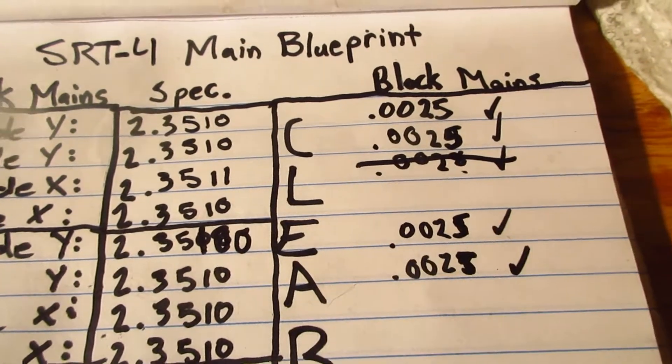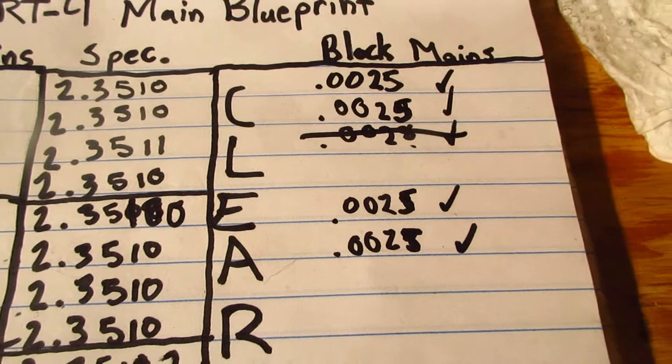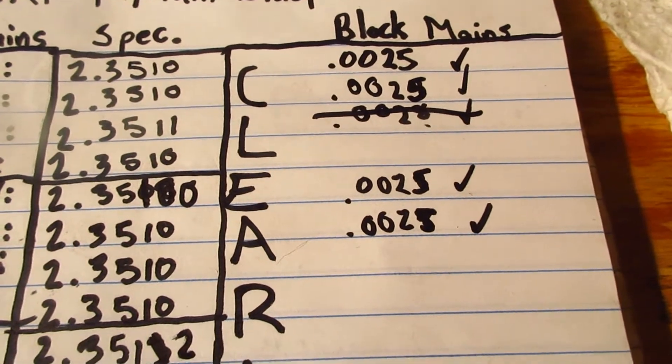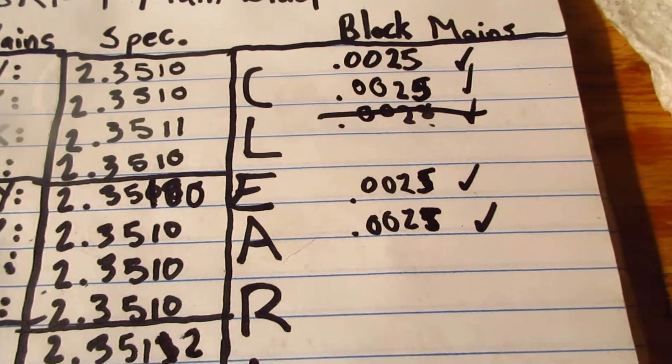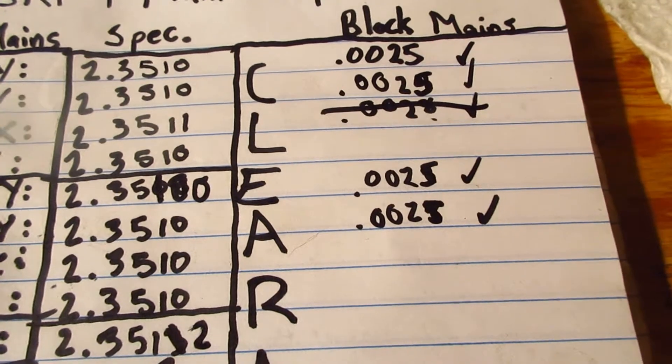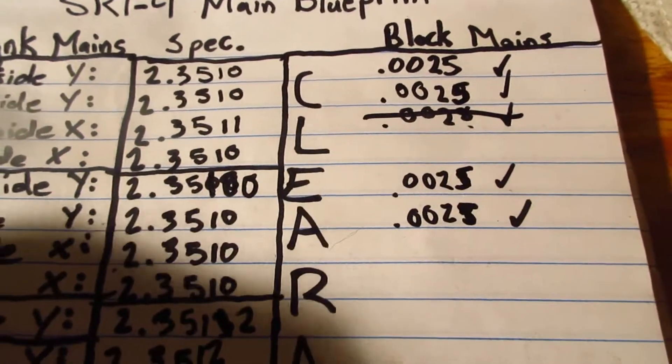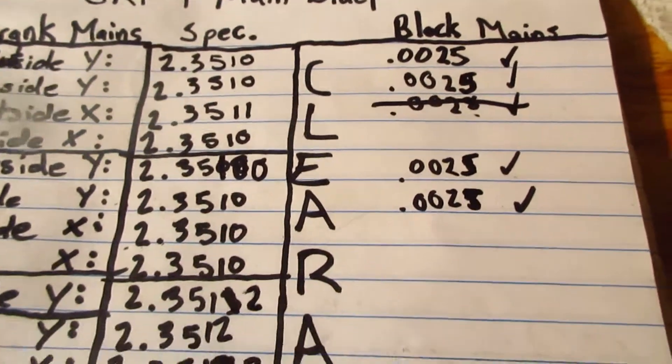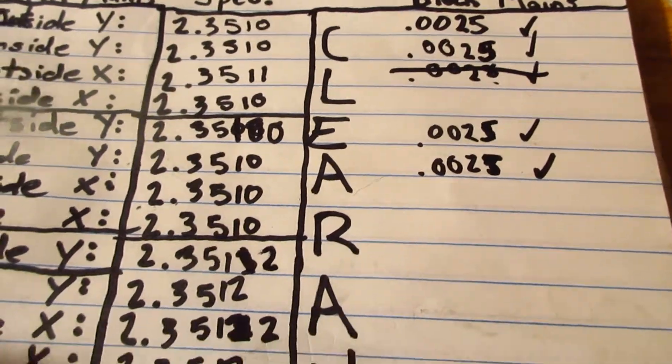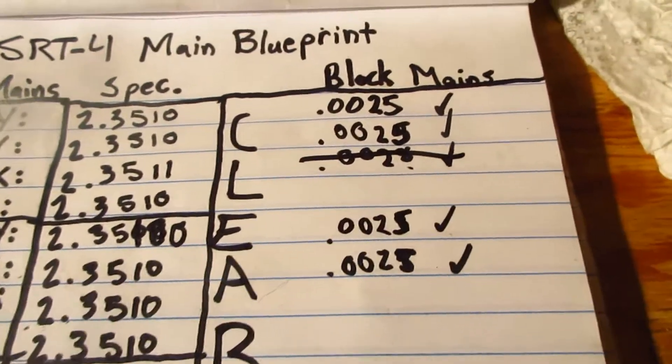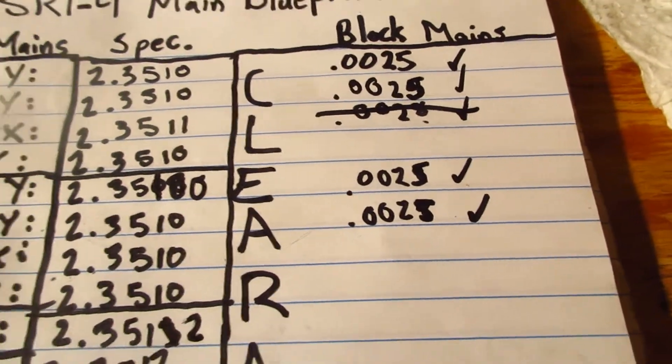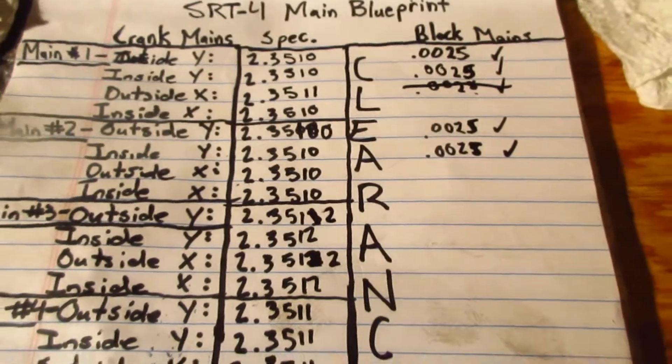This is 2.5 thousandths, it's bigger than stock recommendations but this is not a stock application. Generally with higher rev limits and higher horsepower with a cast steel crank you want slightly bigger clearances so we're looking real good. Let's keep measuring.